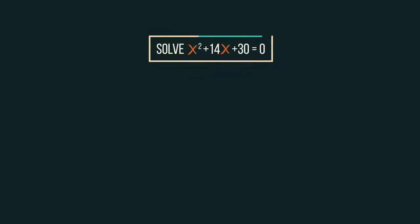So half of 14 is 7, and 7 squared is 49, so subtract 49 and we get this. Now for solving.